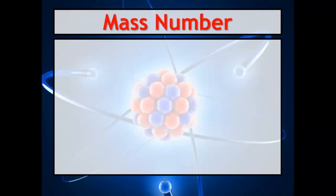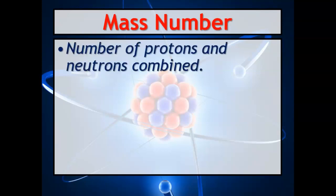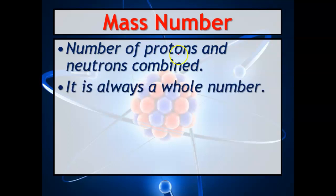So we have our atomic number and our atomic mass. Mass number is different than an average atomic mass. Mass number is the number of protons and neutrons combined, so we're going to add them.